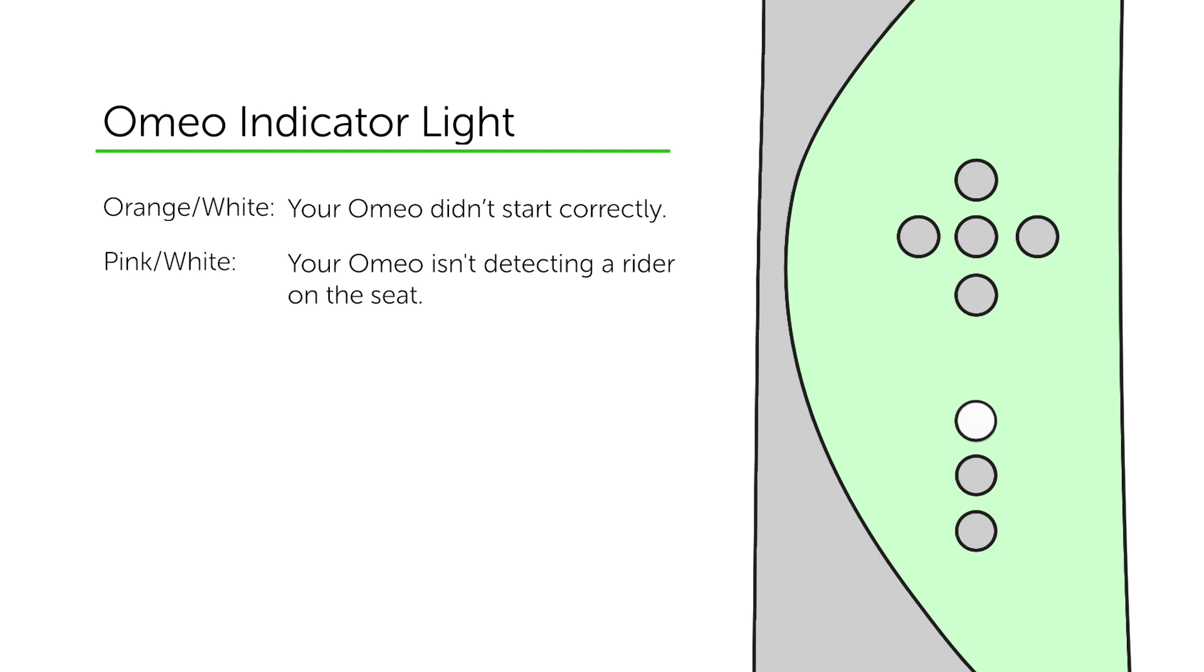When the light flashes between pink and white, it means your Omeo isn't detecting a rider on the seat. This can happen if you raise yourself from the seat with your arms for an extended time. This can be reset once you are in place and raise or lower the Omeo's legs.